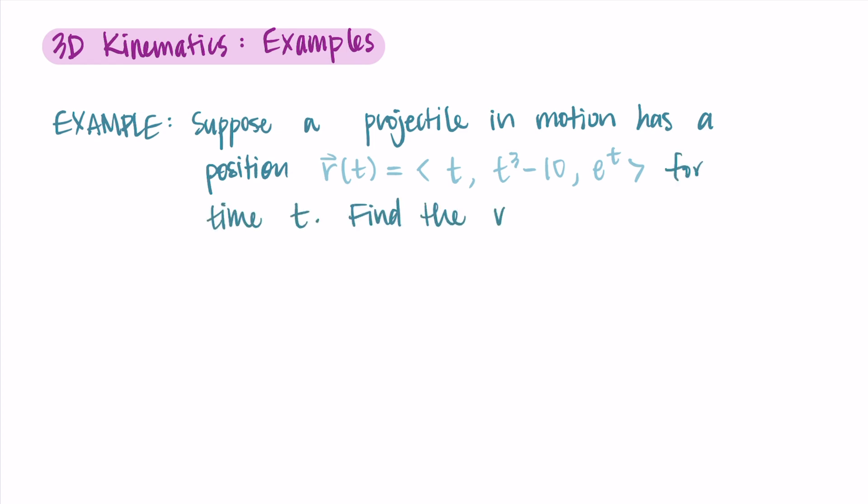In both of these examples, don't worry about units — you can imagine that if there were units on these problems, you could figure them out, but we're just going to focus on the math part. If you want, you can pause the video now and try finding the velocity and acceleration vectors at t = 5.